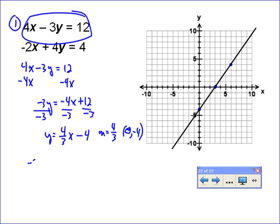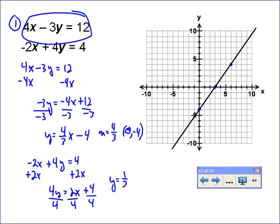We do the other one. Negative 2x plus 4y equals 4, so we add the 2x, that gives us 4y equals 2x plus 4. I divide through by 4 and I'm going to get y equals, well 2 over 4 is 1 half x, and 4 over 4 is just 1.